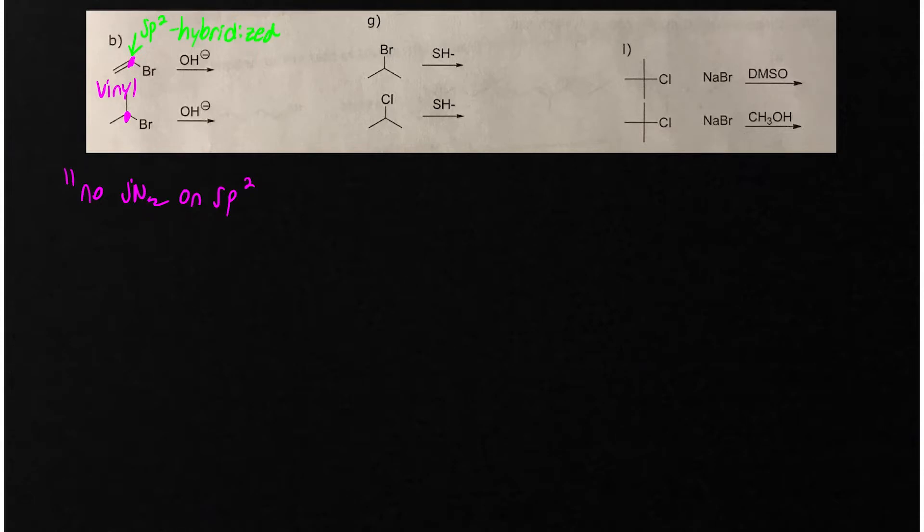In part B, we want to look at the structure of the alkyl halide. This one is secondary and this one is vinyl. I like to teach my students: no SN2 on sp2. This carbon is sp2 hybridized, and therefore in undergraduate organic chemistry, there is no reaction on the vinyl carbon. Secondary alkyl halides can react, so this one is going to be faster.